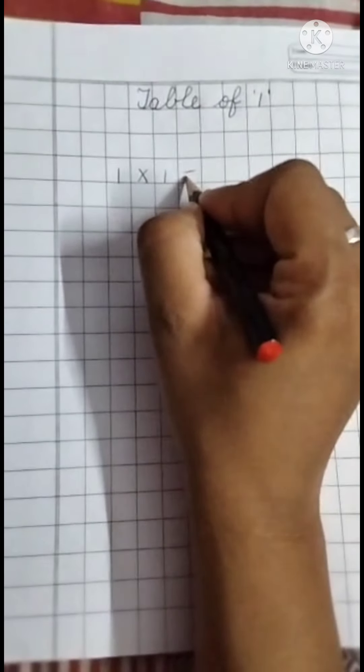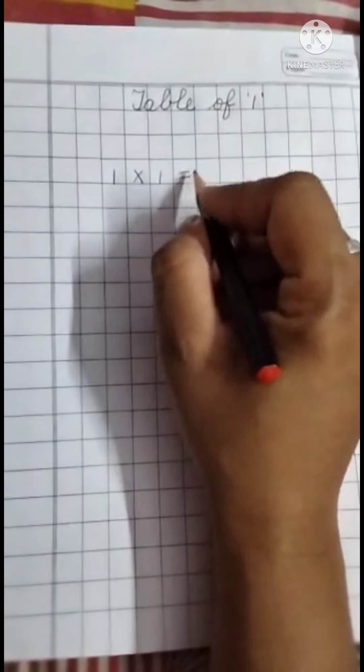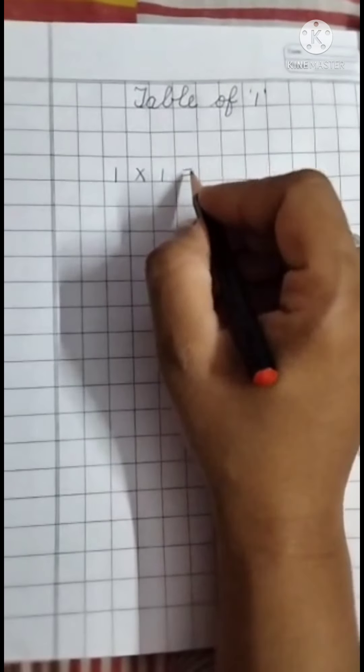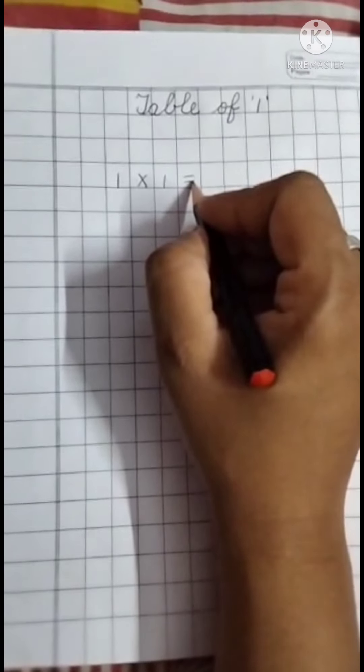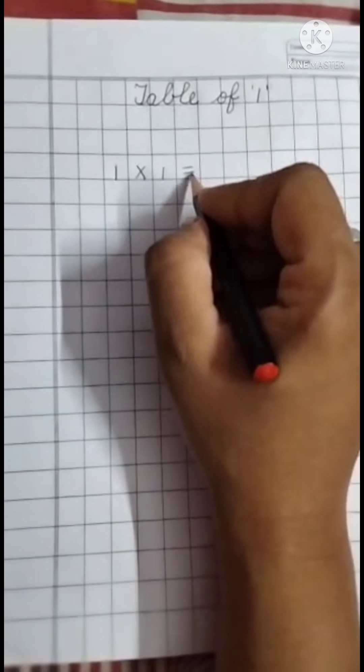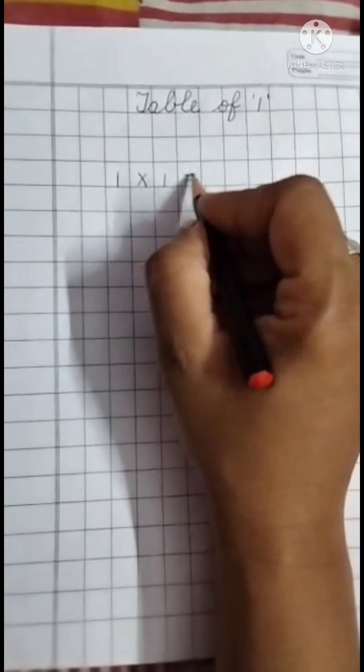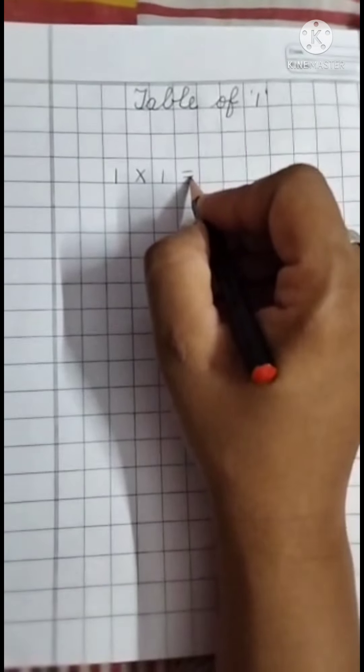Yes. Children. You know this sign? Yes. Tell me. Which sign is this? Very good. Yes. This is the sign of equals to. Very good. This is the sign of equals to.